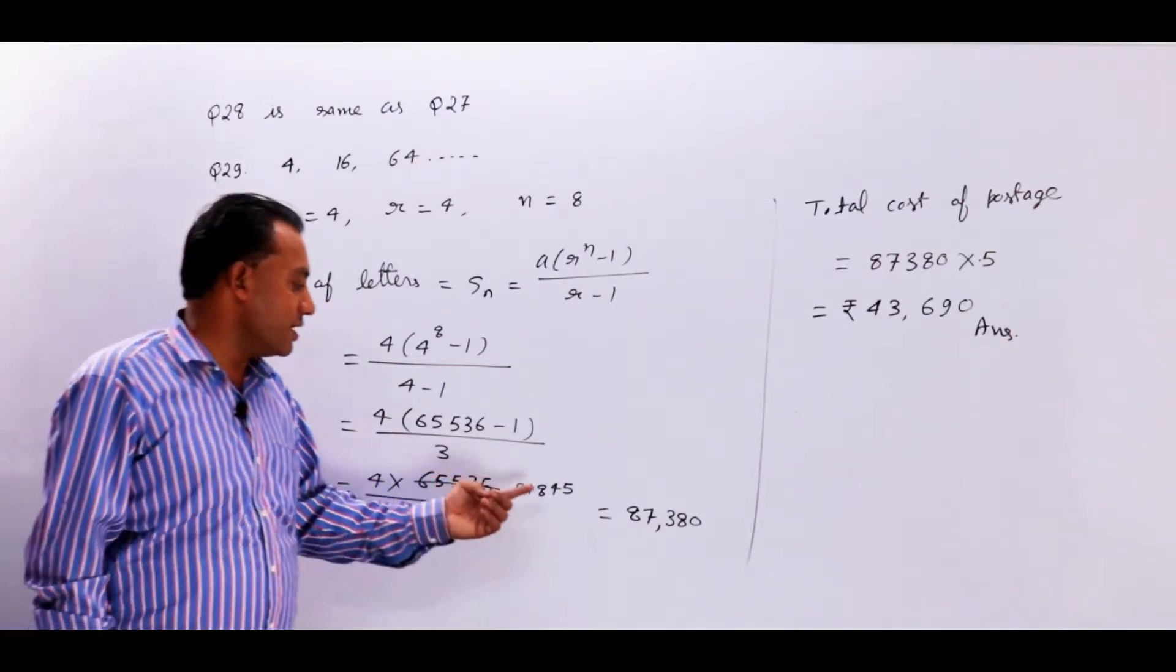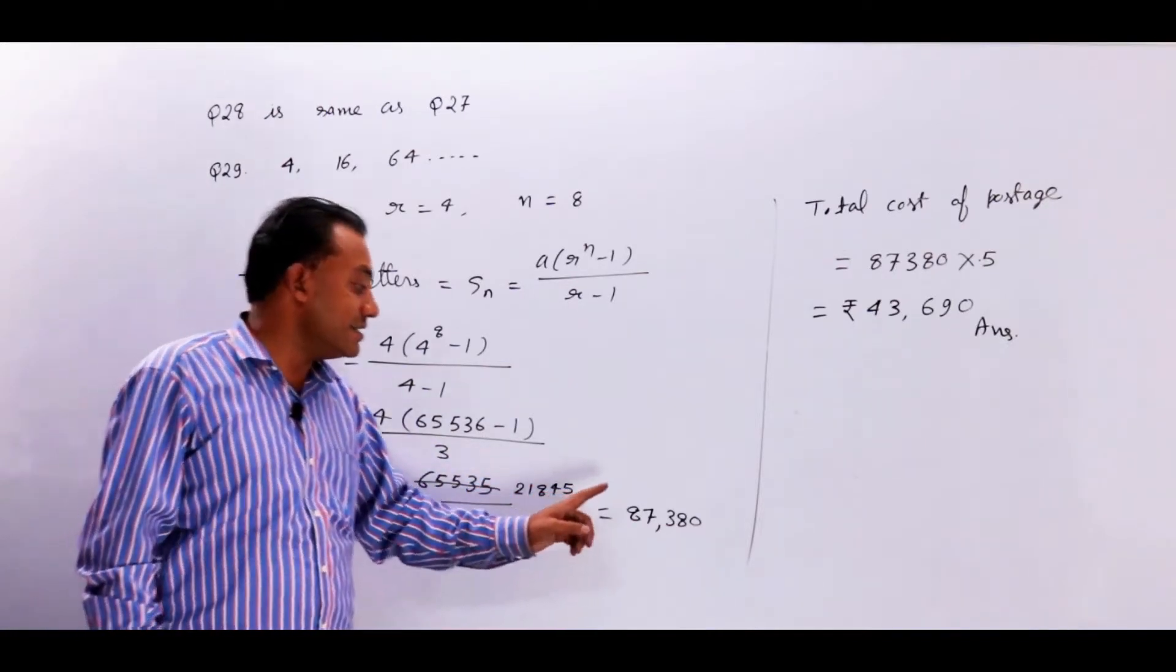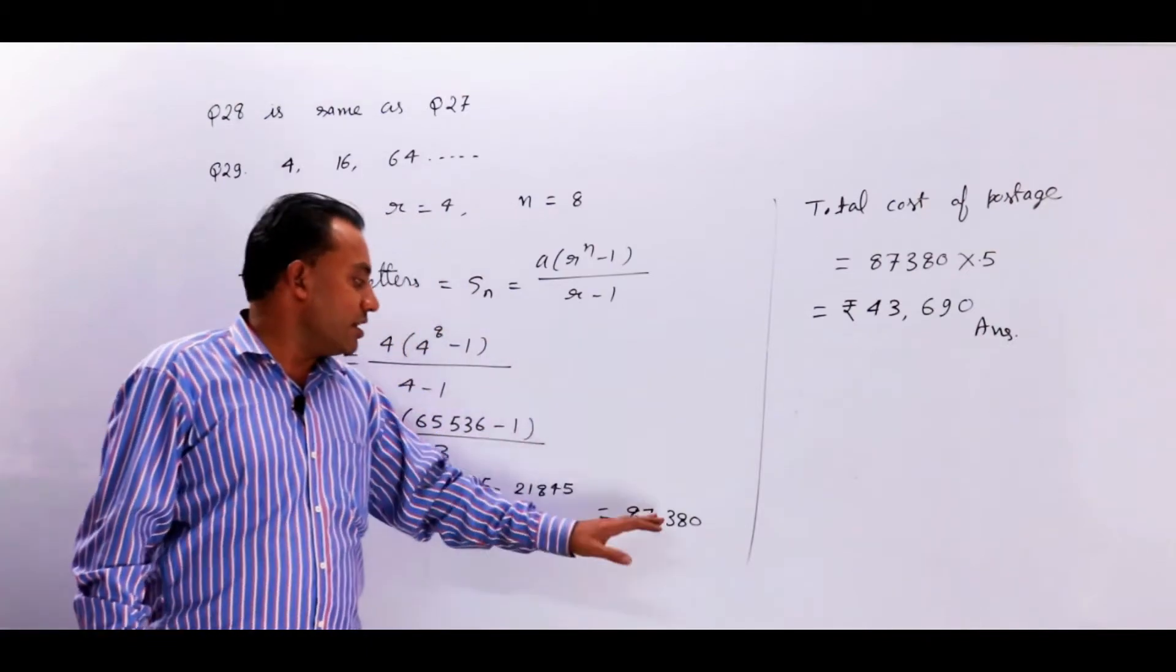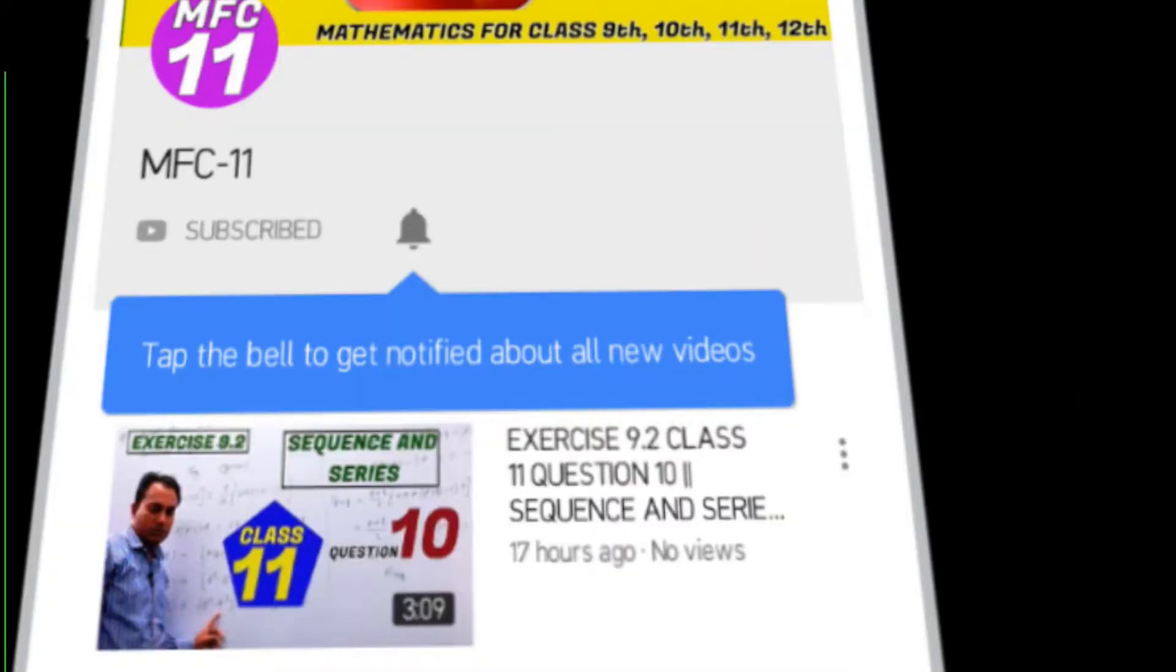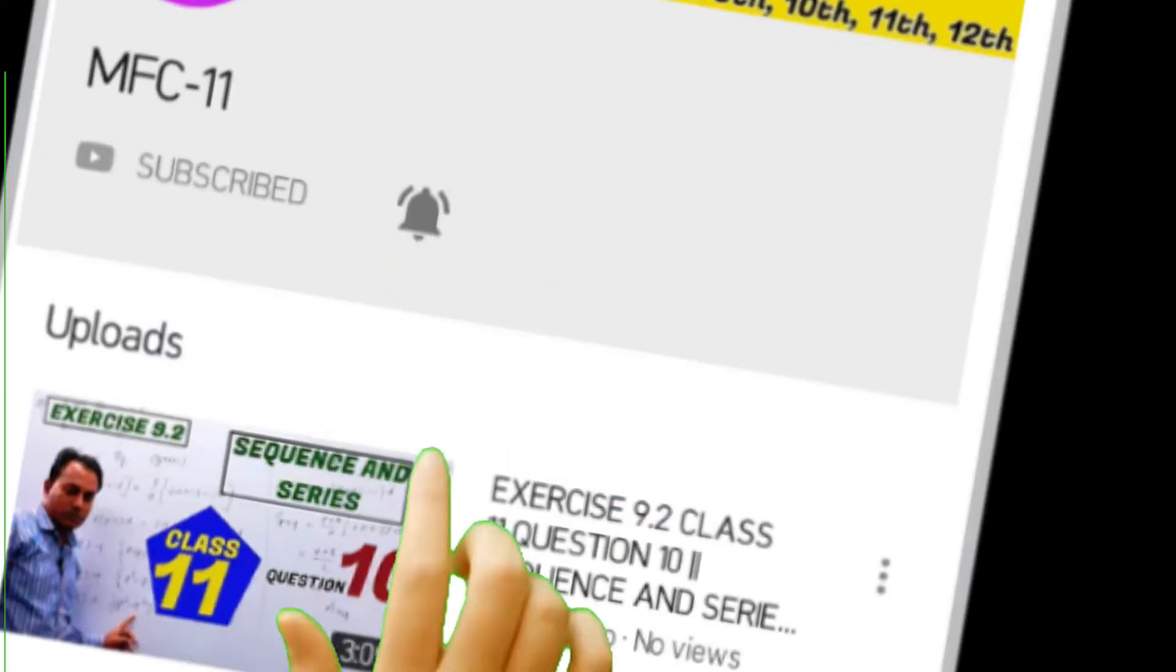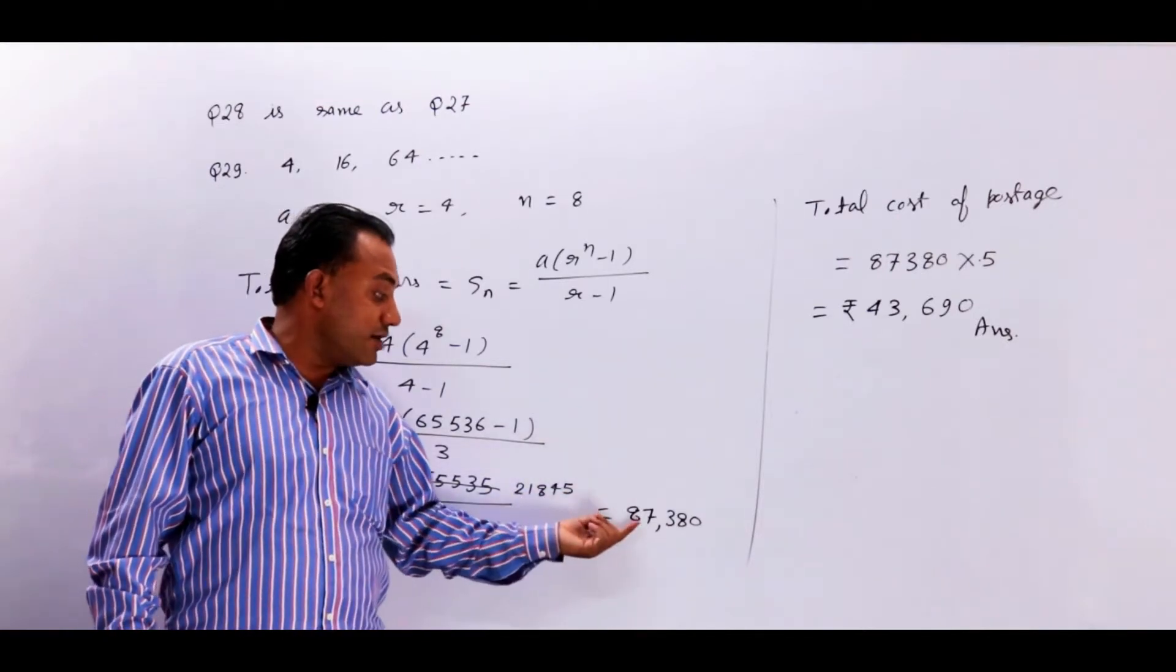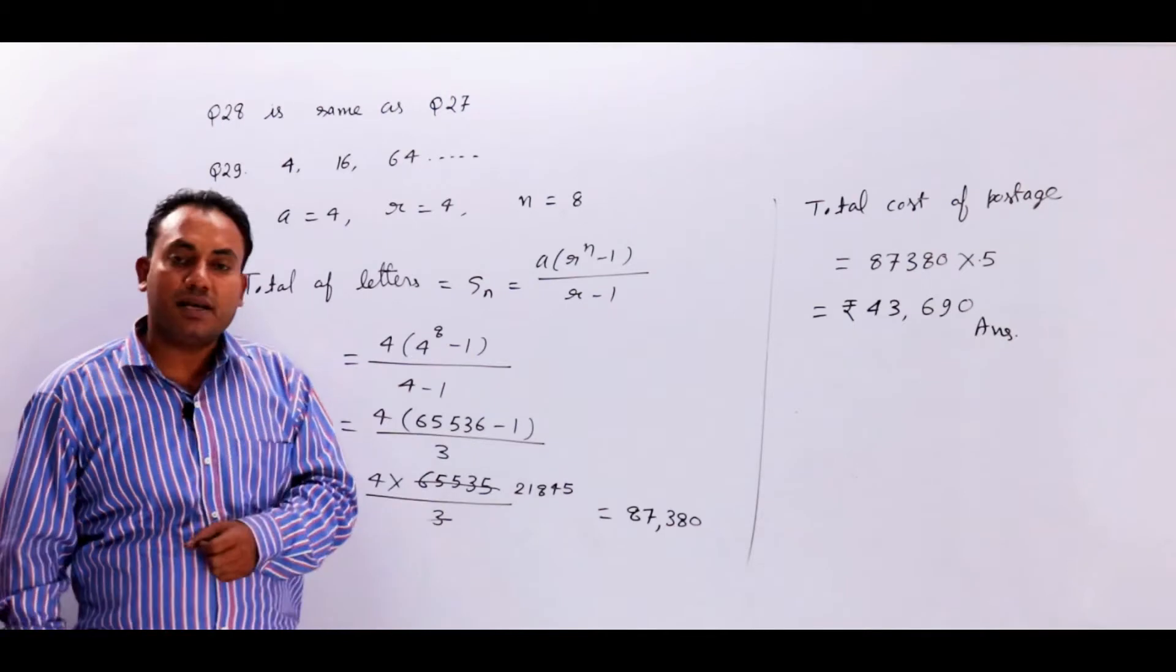3 to the power n minus 1 is equal to 21,845. 4 to the power n minus 1 is equal to 87,380 letters. It is equal to 8 sets. How much is the highest rate? It is equal to 87,380.